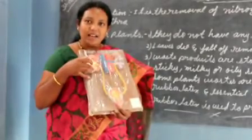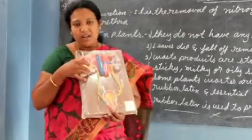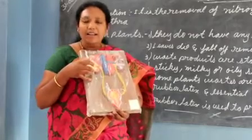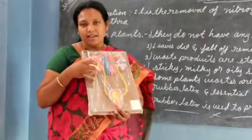Kidneys are bean-shaped in structure and they are brick red in colour.